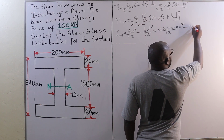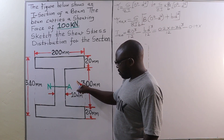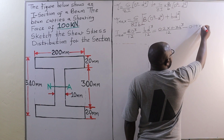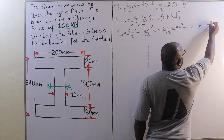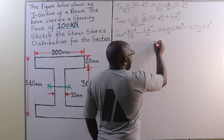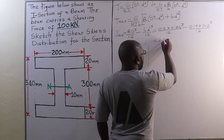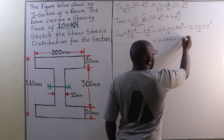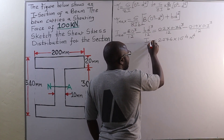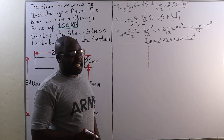So we have 0.19 meters times the depth of the web, which is 300 millimeters or 0.3 meters, cubed, divided by 12. Carrying out that calculation, we get I = 2.276 × 10⁻⁴ m⁴. That is the moment of inertia of this I-beam section about the neutral axis.